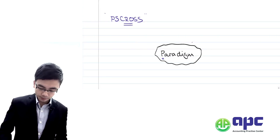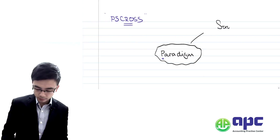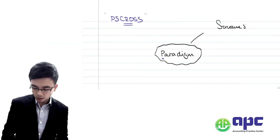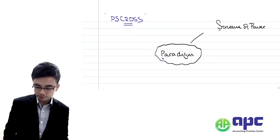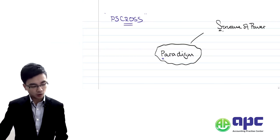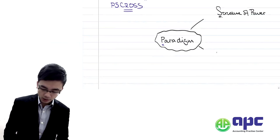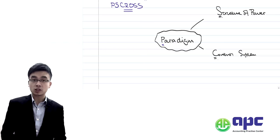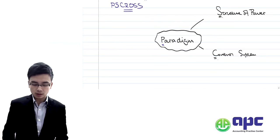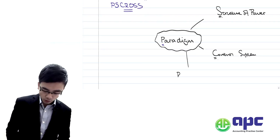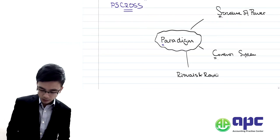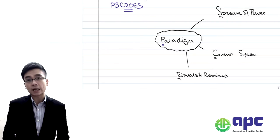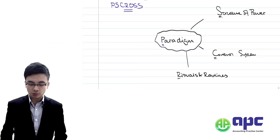S stands for structure of power — the power structure within the organisation. C stands for control system, which includes the reward system and punishment. R stands for rituals and routines — the daily actions done by employees within the organisation.